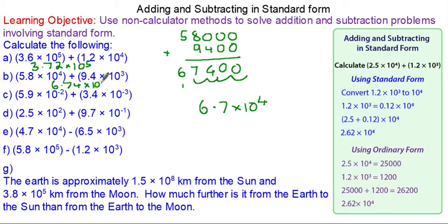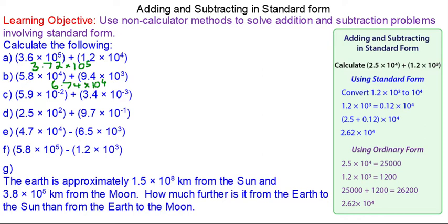For question c, we're now going to do it with numbers less than 1. So 5.9 × 10⁻² is 0.059, five hundredths, and 3.4 × 10⁻³ we can line up as 0.0034.